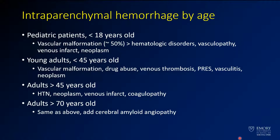You should also think about the age of the patient. In a pediatric patient, there is much more likely to be an underlying lesion, such as a vascular malformation, venous infarct, or underlying neoplasm. For adults less than 45, you also have to think about underlying abnormalities — vascular malformations, drugs, PRES, vasculitis, things like that. Neoplasm is becoming a little more common in this group, but is still not a primary consideration.